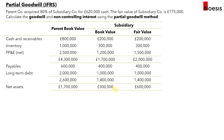Let's look at an example where Parent Co acquired 80% of Subsidiary Co for £620,000 cash. The fair value of Subsidiary Co itself is £775,000. We need to calculate goodwill and non-controlling interest using the partial goodwill method. The table shows the parent's book value, the subsidiary's book value, and the subsidiary's fair value at the point of acquisition, including items such as cash, receivables, inventory, net PPE, payables, long-term debt, and net assets.